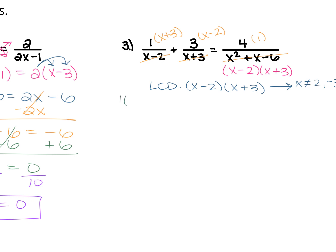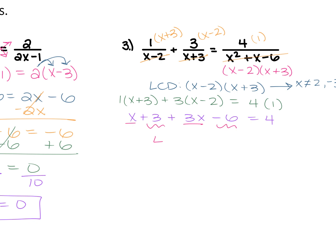So ultimately, we have 1 times x plus 3 plus 3 times x minus 2 is equal to 4 times 1. Distribute: that's x plus 3 plus 3x minus 6 is equal to 4. Combine your like terms — x plus 3x is 4x, and 3 minus 6 is negative 3, still equal to 4. We move the 3 over by adding it to both sides, giving us 4x is equal to 7. Then we divide each side by the 4, and we have that x is 7 fourths.